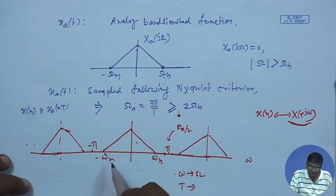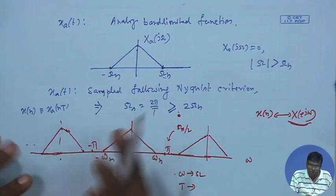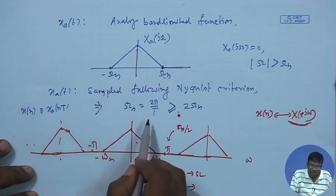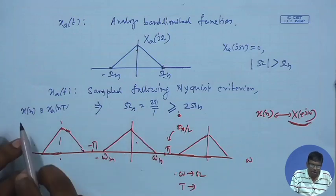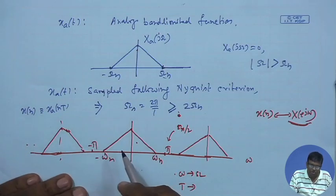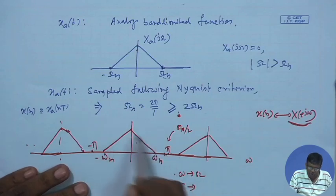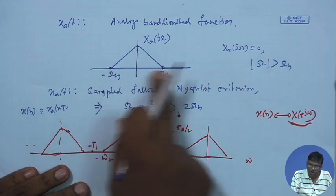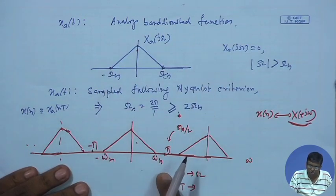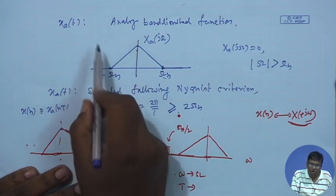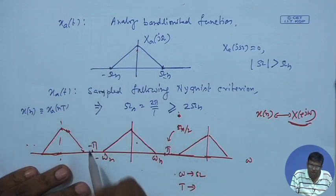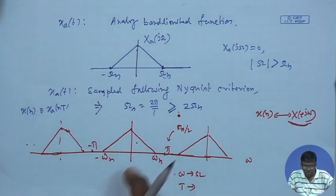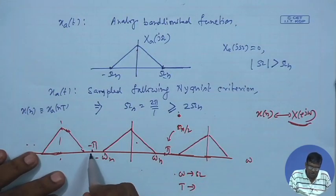The sequence obtained by sampling this analog function at that rate has a DTFT that, from minus π to π, is a replica of the original analog Fourier transform. The only difference is that it is a function of small omega instead of capital Omega, and a multiplication by 1/T has taken place. Otherwise, shapewise it is the same.